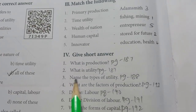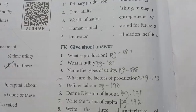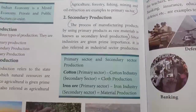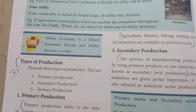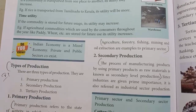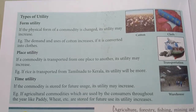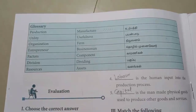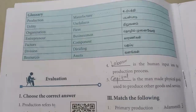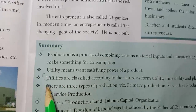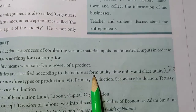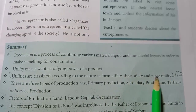Third one: Name the Types of Utility. Page No. 188, under Types of Utility. From the summary on page 193: Utilities are classified according to their nature as Form Utility, Time Utility, and Place Utility.